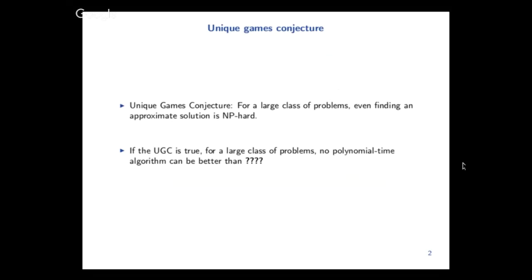But that's fine. So if you guys like computational complexity theory, everyone knows the P equals NP conjecture. Now I would say that the second most famous conjecture is the Unique Games Conjecture. Basically what it says is that for a very large amount of interesting problems, actually even approximating those problems is NP-hard.